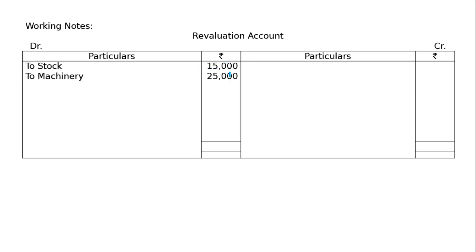Next, machinery is reduced by 10%. Machinery value is 2,50,000, and 10% of that is 25,000. So machinery is debited at 25,000. Decreasing asset is debited to Revaluation account.